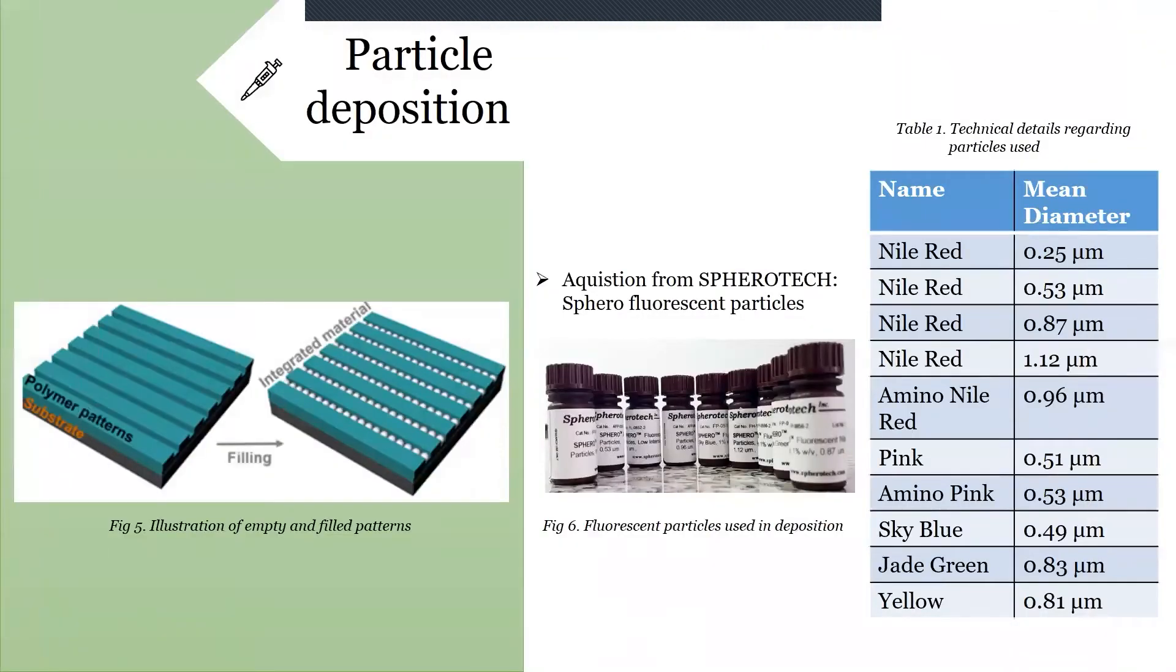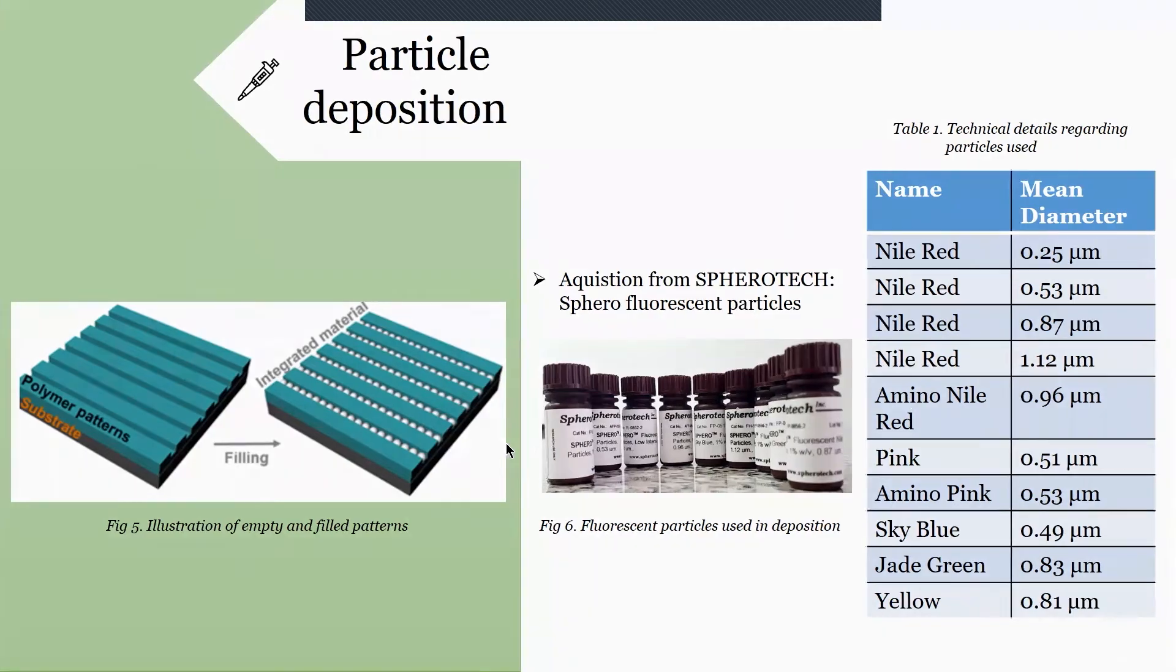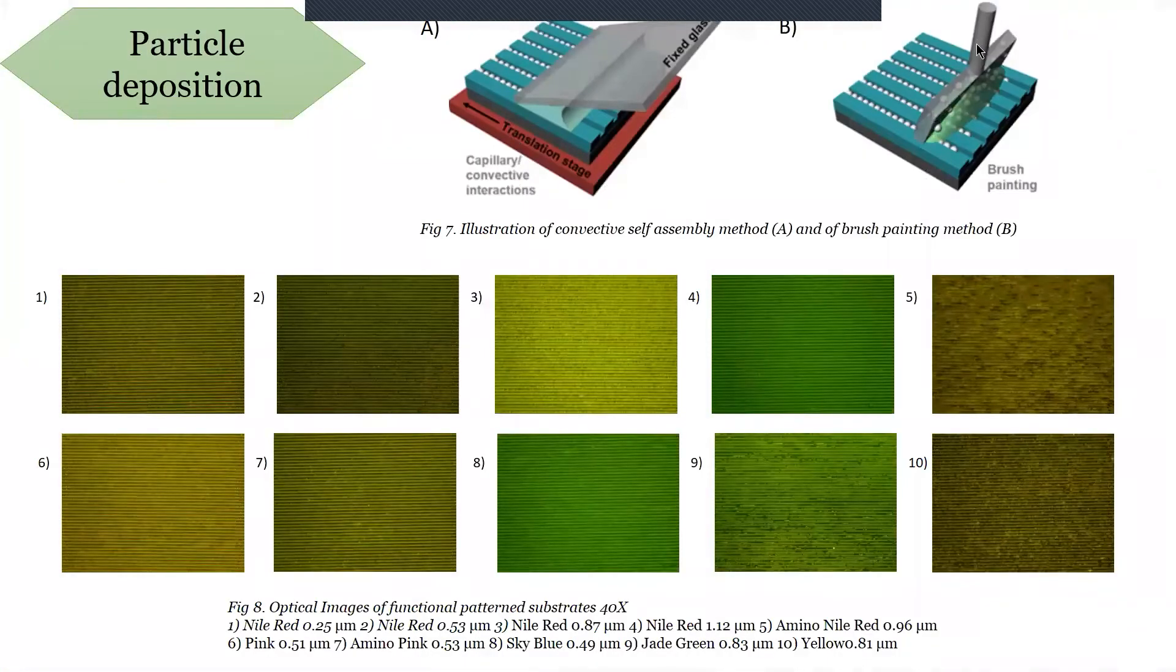Furthermore, we have introduced colloidal structures into the pattern in order to create multifunctional periodic surfaces. For this, we have made an acquisition of fluorescent polystyrene spherical particles of different diameters and colors from Spherotech. The methods used were both convective self-assembly and brush painting for spreading and guiding the colloidal suspension into the patterns.